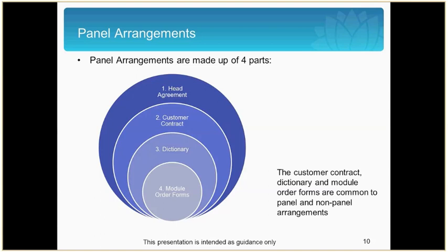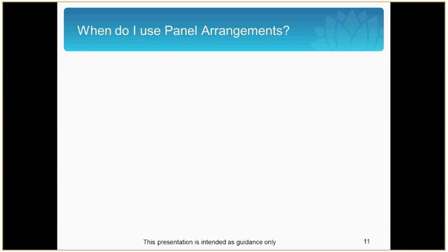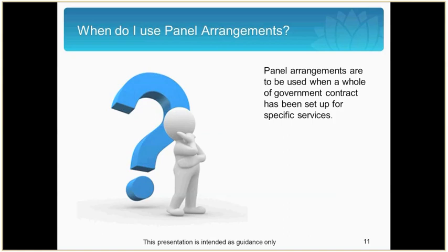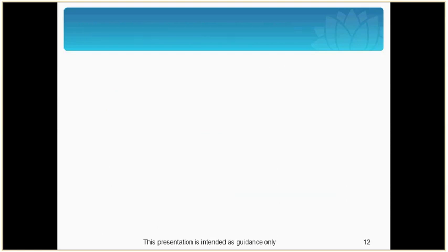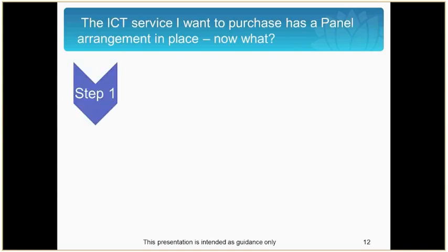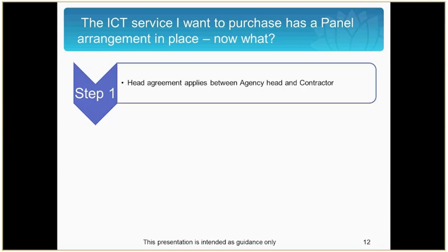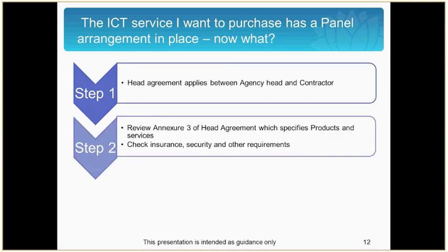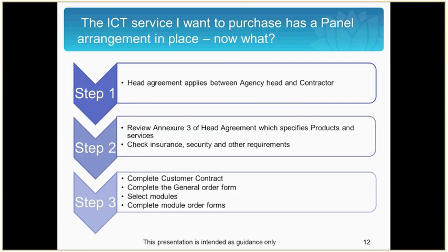Non-panel arrangements only contain the customer contract, dictionary and module order forms. You might be asking yourself: when do I use the panel arrangement? Non-panel arrangements are used when a whole-of-government contract has been set up for specific services. So if the ICT service that you want to purchase has a panel arrangement, the first step is to review the head agreement which applies between the agency head and contractor. The second step is to review annexure 3 of the head agreement which specifies products and services, and check insurance, security and other requirements. The third step is to complete the customer contract including item 7, and complete the general order form.